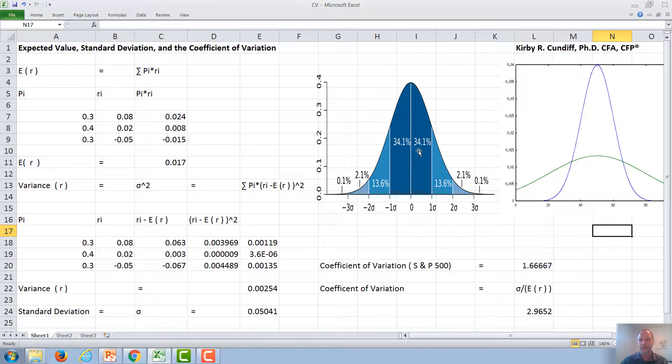Roughly two-thirds, 68%, of the probabilities of its rate of return will fall beneath the expected value of the investment plus one standard deviation and the expected value of the investment minus one standard deviation. The coefficient of variation is a ratio of the risk measured by standard deviation over the expected value.